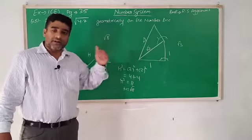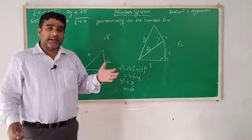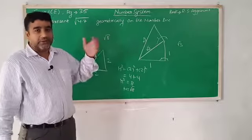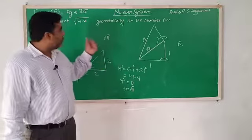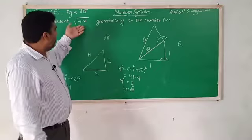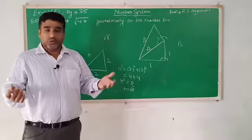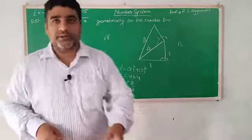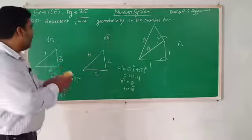This is a different method. This method is applicable for each and every question, but I am telling you the procedure through this one question. I am explaining with 4.7. Let's see how to make under root 4.7 on the number line.